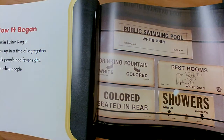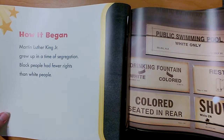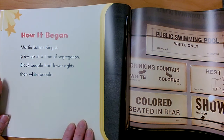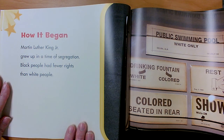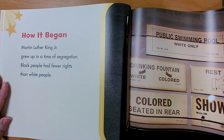How It Began. Martin Luther King Jr. grew up in a time of segregation. Segregation means separated. Black people had fewer rights than white people.